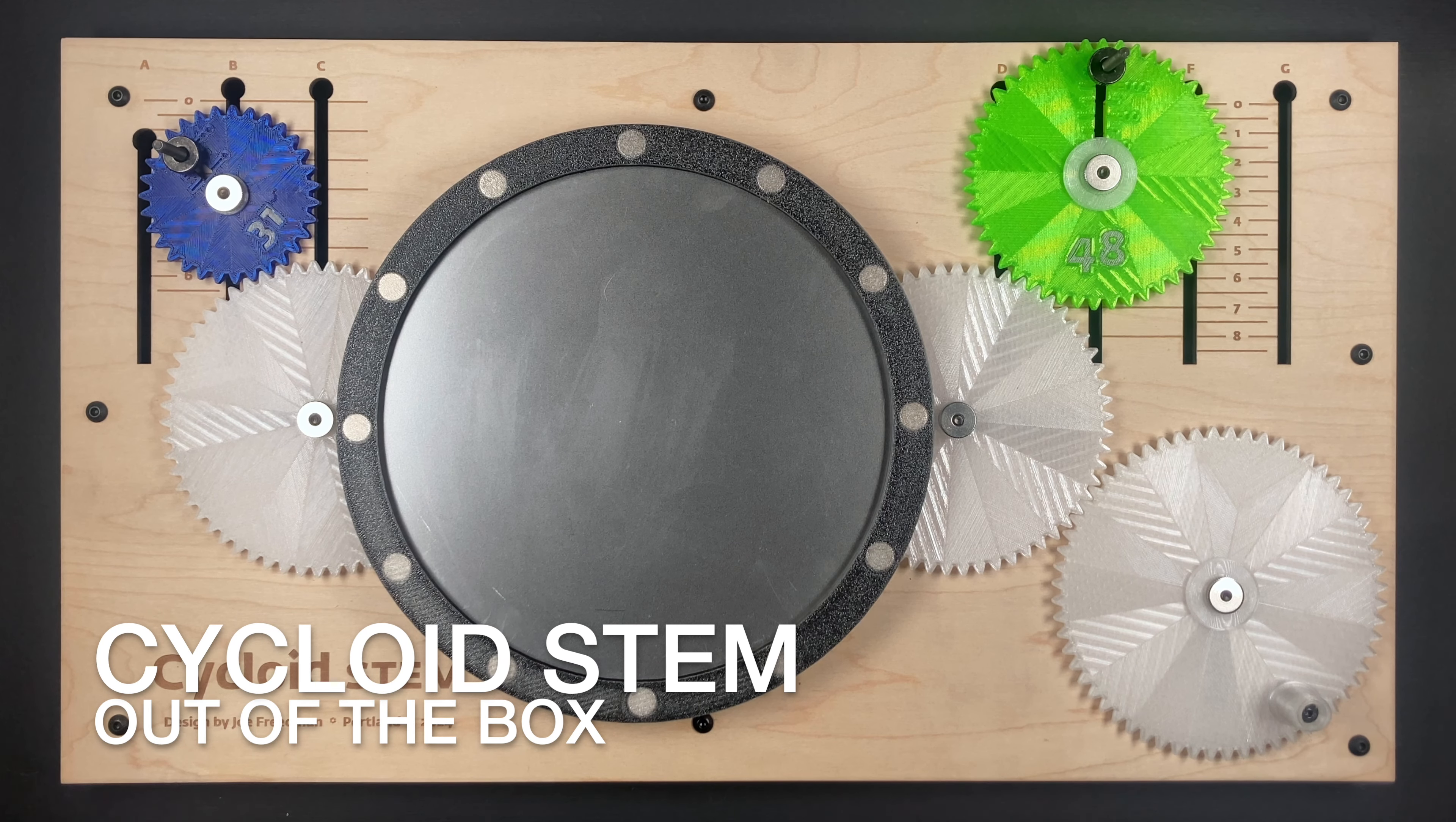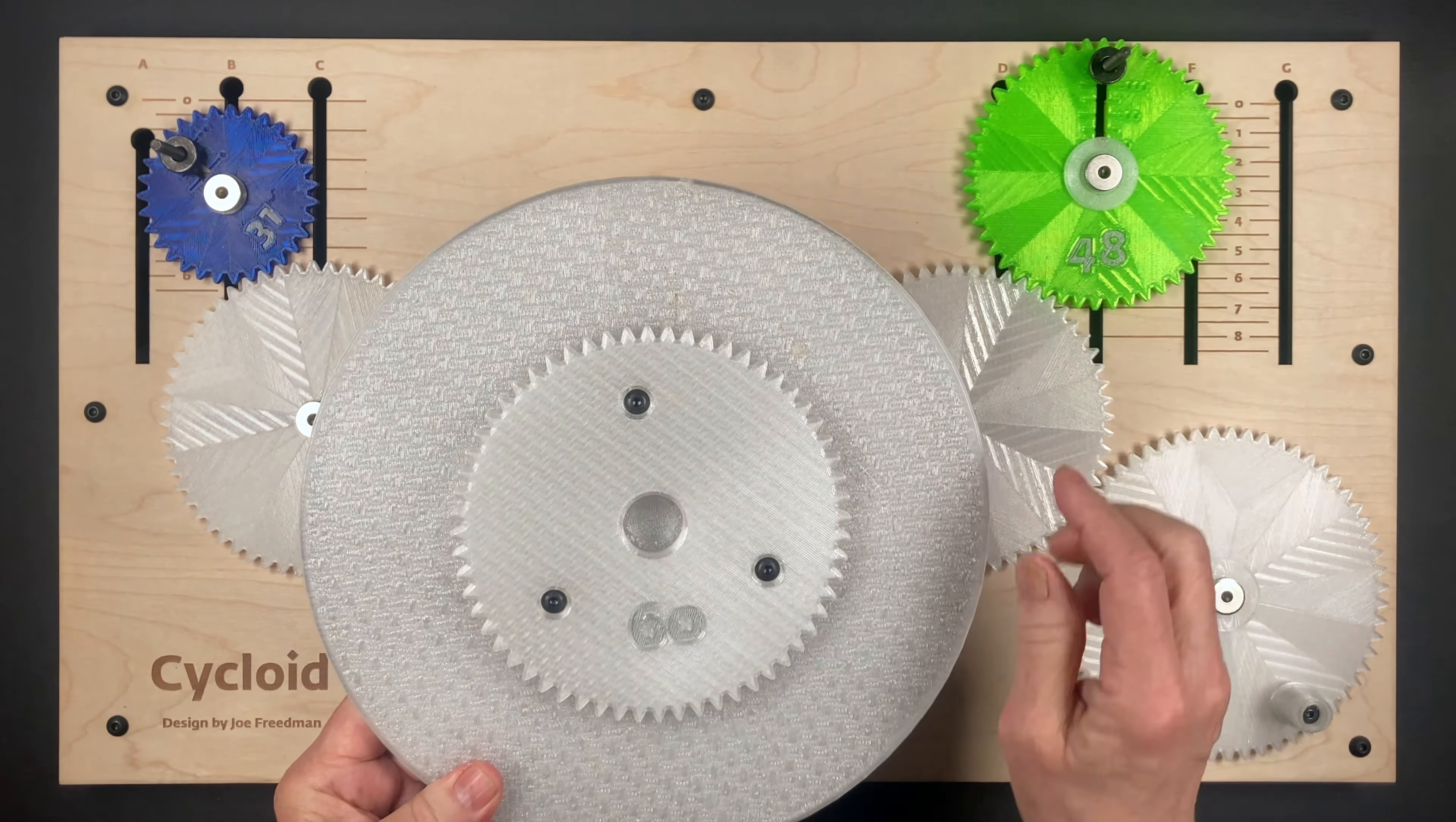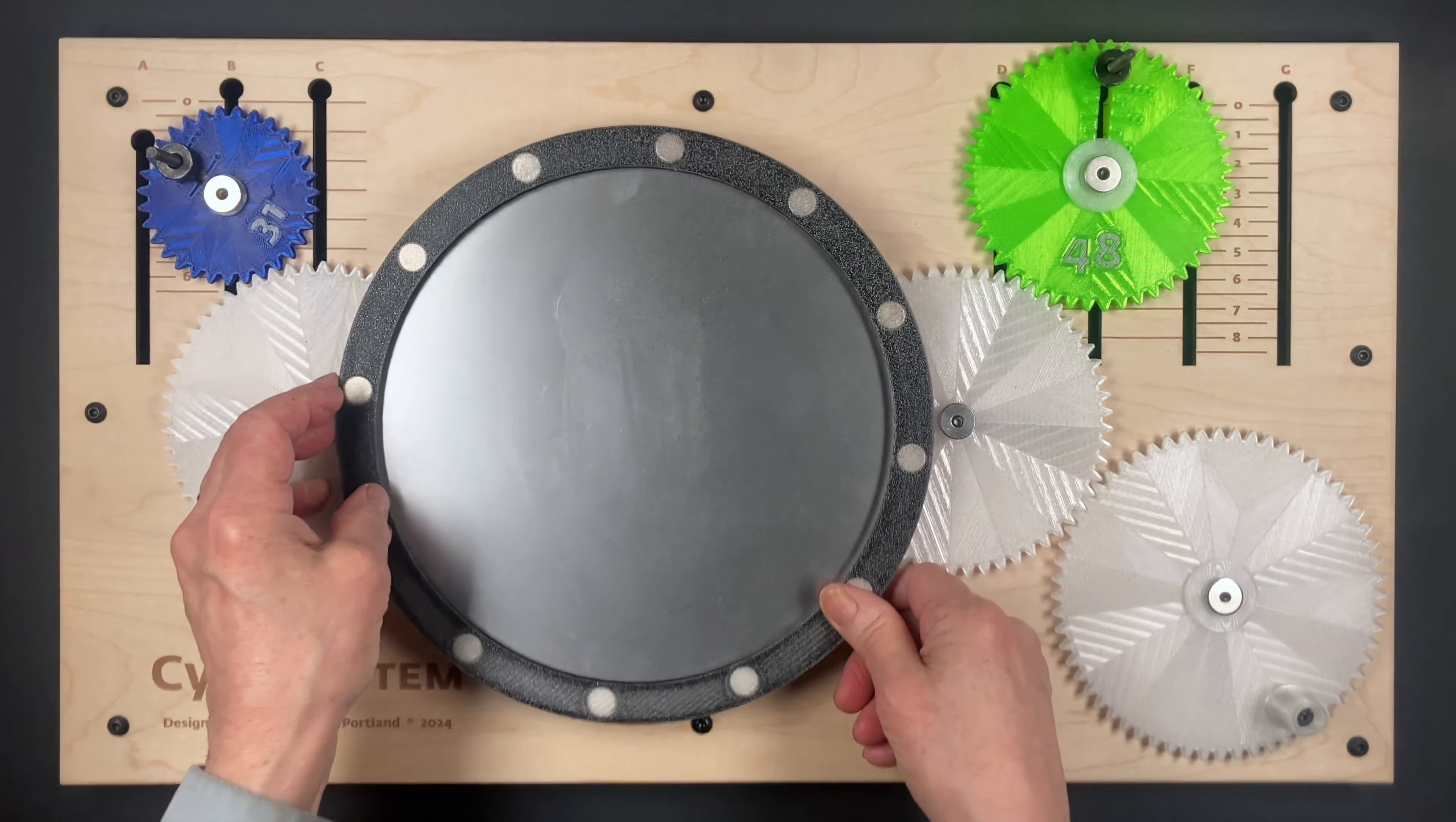This is the cycloid steam machine as you'll get it out of the box. First thing you want to do is just lift up the turntable, flip it over, and you'll see that their gear is marked with how many teeth there are. This is the 60 tooth gear. Flip it back over and put it back down.